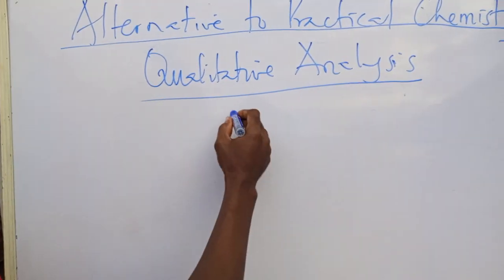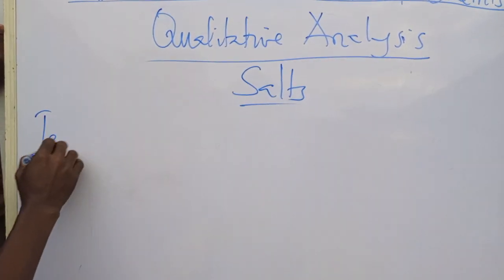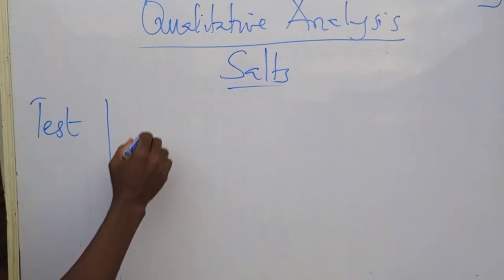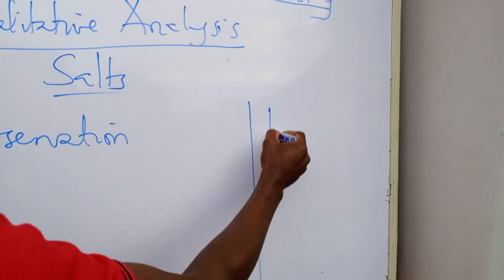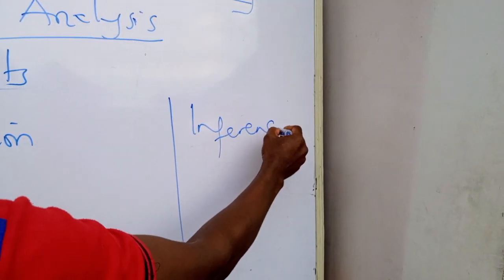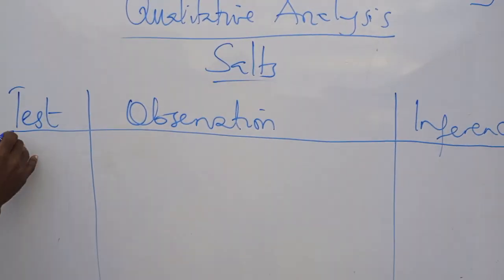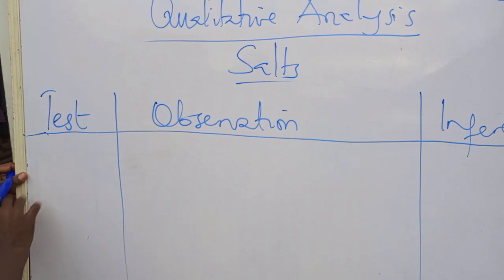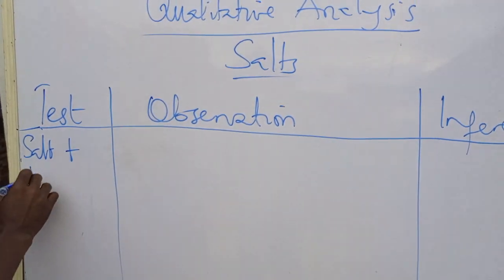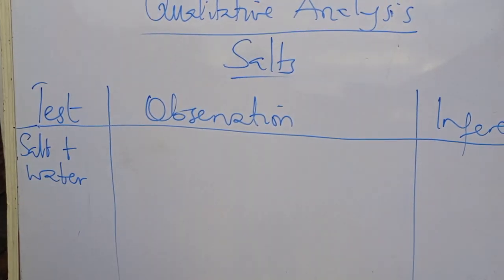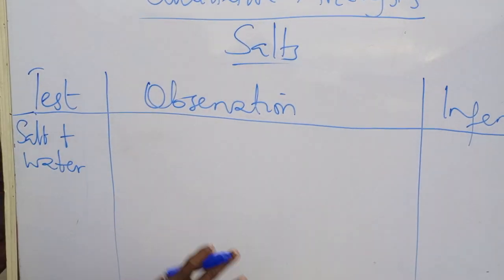Qualitative analysis is analysis on salts. Let me show you — this is how the table will be given to you. You have test, observation, and inference. In this table, you'll be given here: salt plus water, and your observation is what happens when water is added to the salt.